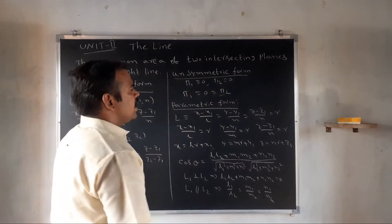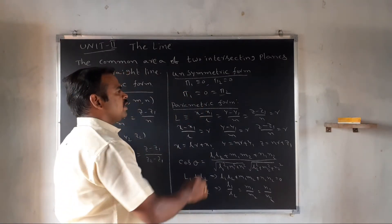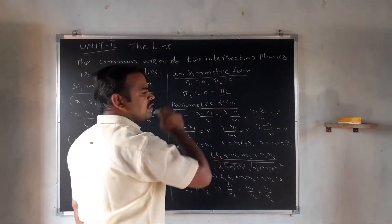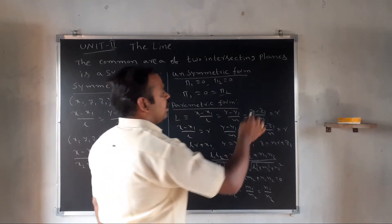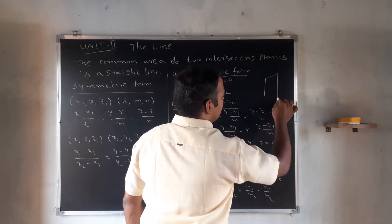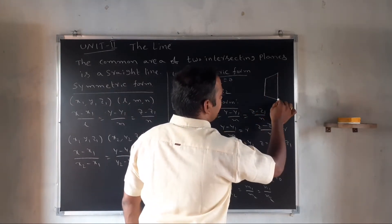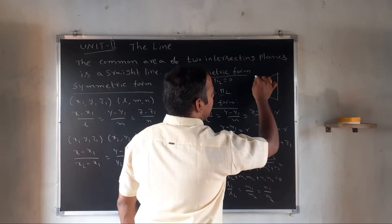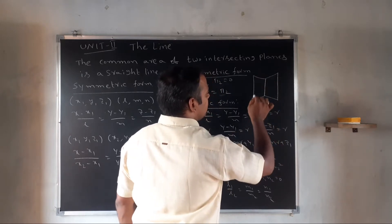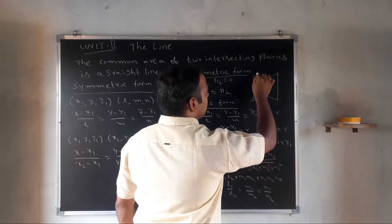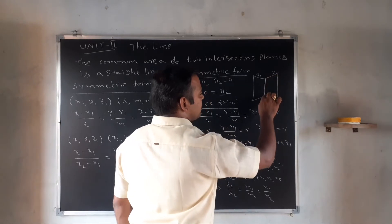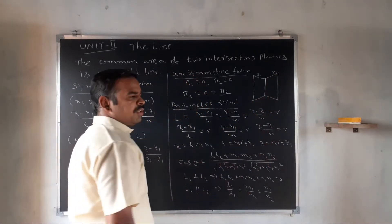Unsymmetric form. The unsymmetric form of the line equation represents the line as the intersection of two planes: φ1 = 0 and φ2 = 0. This is the unsymmetric form of the line.